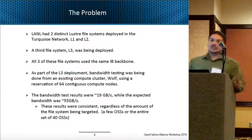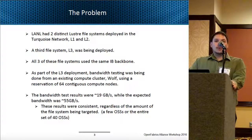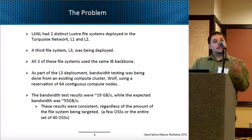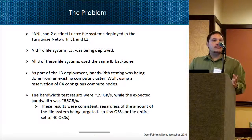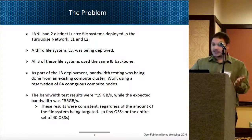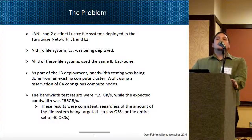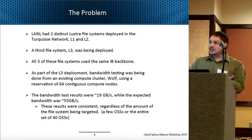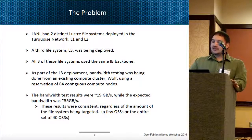As Susan mentioned yesterday, we recently deployed a couple of Lustre file systems in our environment. We were getting rid of Panasas and needed to start deploying these newer systems on our IB fabric instead of our Ethernet backbone. L1 and L2 came into our unclassified network called the turquoise network, and soon after that we were deploying a third file system made up of EDR switches — that transition from an FDR InfiniBand backbone to EDR when the L3 file system came in.